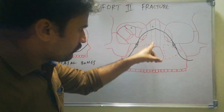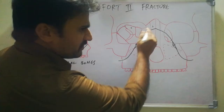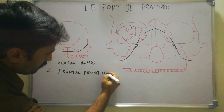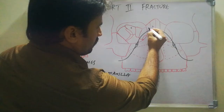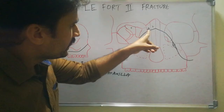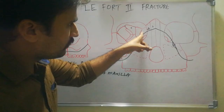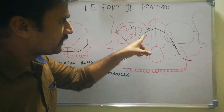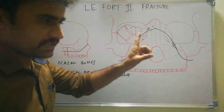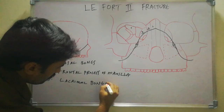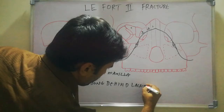After that, it crosses the frontal process of the maxilla — that is the second landmark. After crossing the frontal process of maxilla, it enters the medial wall of the orbit. In the medial wall of the orbit, it fractures the lacrimal bone behind the lacrimal sac. This is a very important point. Lacrimal bone behind the lacrimal sac is the third landmark.